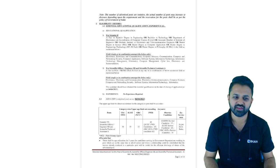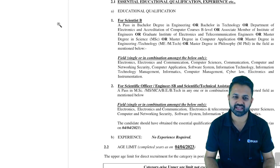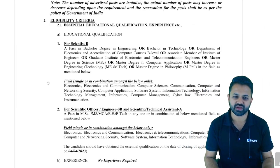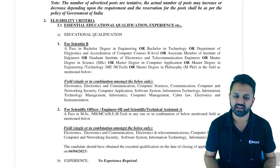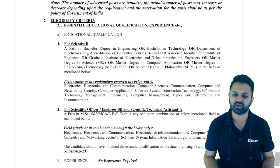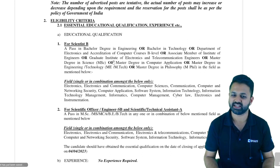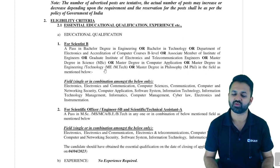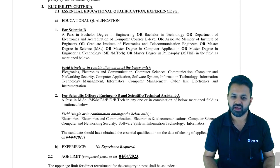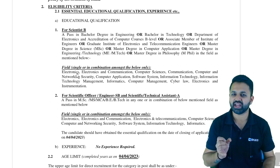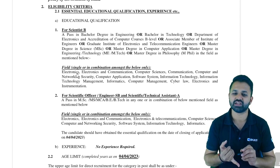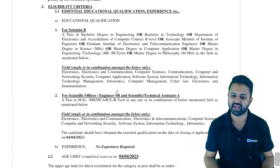Now let's look at the eligibility criteria — Essential Education Qualification and Experience. For Scientist B, you can have a degree of B.Tech or B.E. in Electronics, or an Accreditation of Computer Science course B level, or Associate Member of Institute of Engineers, etc. You can also have an MCA, Master's Degree in Computer Application, or ME/M.Tech. Eligible fields include electronics, electronics and communication, electronics and instrumentation, etc.